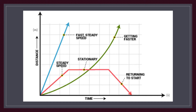The pink 'returning to start' graph has an initial distance that decreases to zero over time, giving a negative velocity. Considering the whole pink graph — steady speed, stationary, and returning to start — the total displacement is zero. This represents a car that travels away from its start, rests for some seconds, then returns to the starting point.